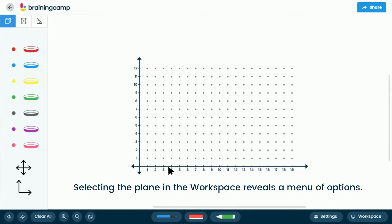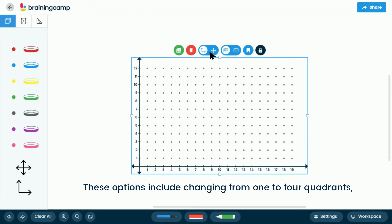Selecting the plane in the workspace reveals a menu of options. These options include changing from one to four quadrants, selecting the background for the plane, copy, and delete options.